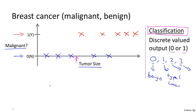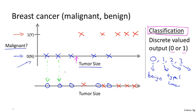In classification problems, there is another way to plot this data. Let me show you what I mean. I'm going to use a slightly different set of symbols to plot this data. So if tumor size is going to be the attribute that I'm going to use to predict malignancy or benignness, I can also draw my data like this. I'm going to use different symbols to denote my benign and malignant, or my negative and positive examples. So instead of drawing crosses, I'm now going to draw O's for the benign tumors. And I'm going to keep using X's to denote my malignant tumors.